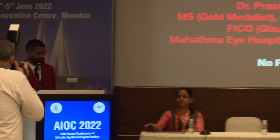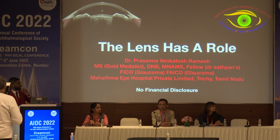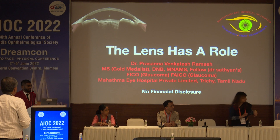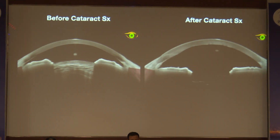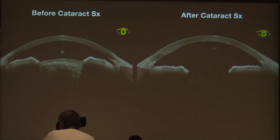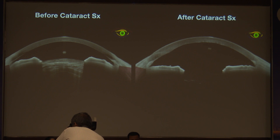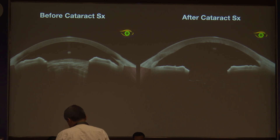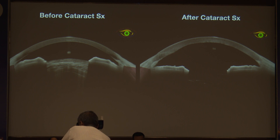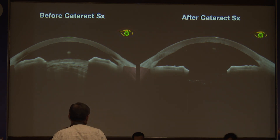The lens as a role is what I am going to take you through for the next few minutes. You can see before and after cataract surgery — what we observe is the thickness of the lens. On the left you can see almost 5 millimeters of thickness, and on the right after the lens has been extracted you can see how the 1-millimeter IOL has caused a change in the anterior chamber. This is how lens extraction has made an impact in glaucoma management.